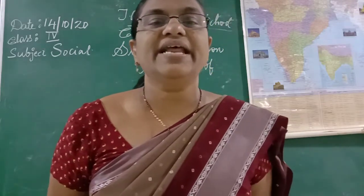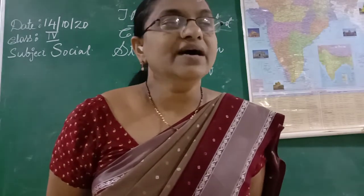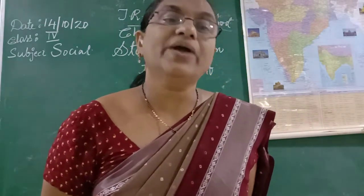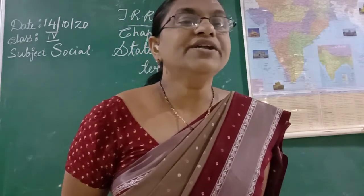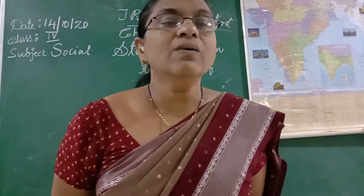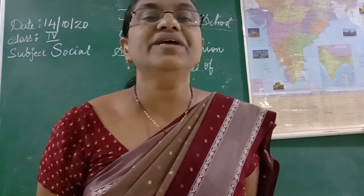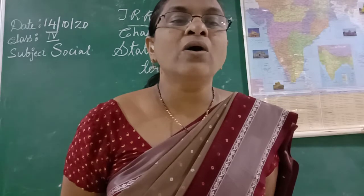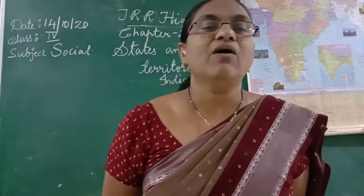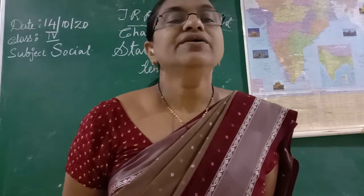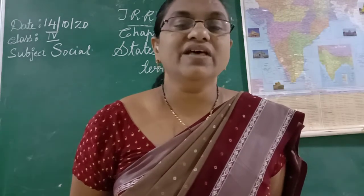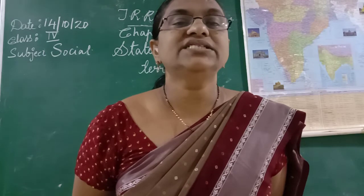These are the 7 union territories and 29 states. In the next class, I will show you all 29 states and union territories on the map and where they are located. At home, learn the spellings of the states and their capitals. You should be able to tell the capital of each of the 29 states and the 7 union territories. I hope you understand about India being divided into 29 states and 7 union territories. Stay safe at home, don't come outside as it is raining heavily. Until we meet in the next class — bye children, have a nice day.